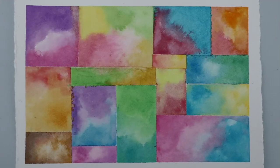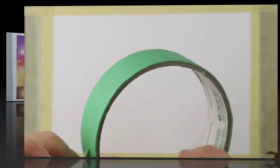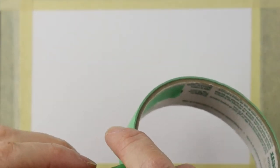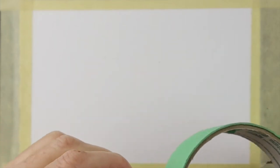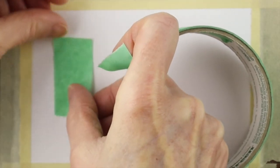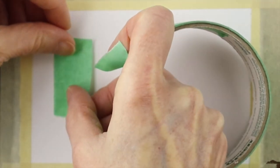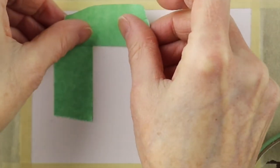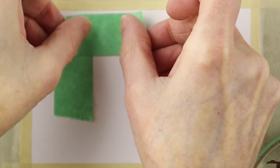Today we're making an abstract geometric painting using masking tape to mask off some areas. You can just get some painters tape or masking tape and just put it sort of parallel to the side of the edge of the paper. The paper is also taped down and you just want to start forming geometric shapes.